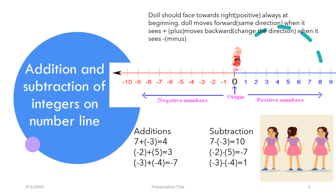We all introduce the number line to students when we introduce integers. Here we have the zero position — the origin. Here we have all positive values and here we have all negative values. These are plus values and these are minus values. Now let's see how we can introduce additions and subtraction to integers.